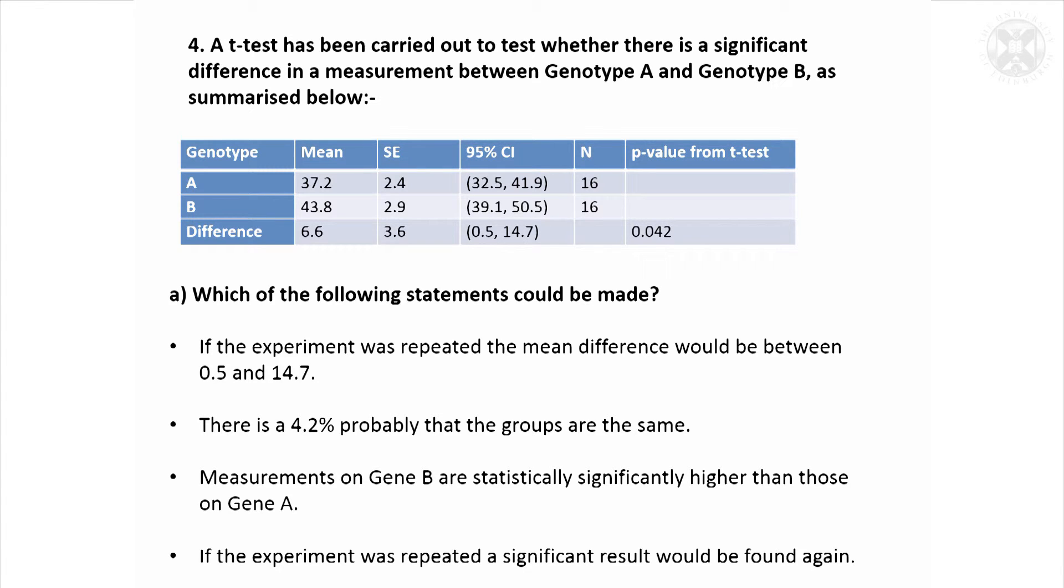Last question is just looking at different scenarios. You've done an analysis, you've done a t-test to compare groups A and B, different genotypes, come up with this p-value of 0.042. What could you say? Could you conclude that if you repeated the experiment the difference would be within this confidence interval? That's the 95% confidence interval for the difference. Would you be sure that your difference would be within that? Is that what that confidence interval is telling you? Yeah, you're not absolutely sure, but you're 95% sure.